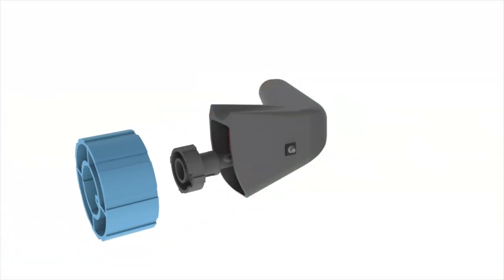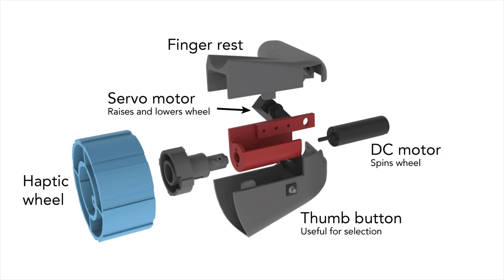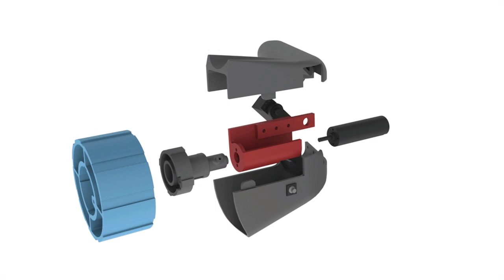The haptic revolver consists of a wheel that contains various haptic elements. A servo motor moves this wheel up and down as you contact a virtual surface. A DC motor spins the wheel to render shear forces and position haptic elements under the fingertip. The thumb button on the side of the controller enables input.